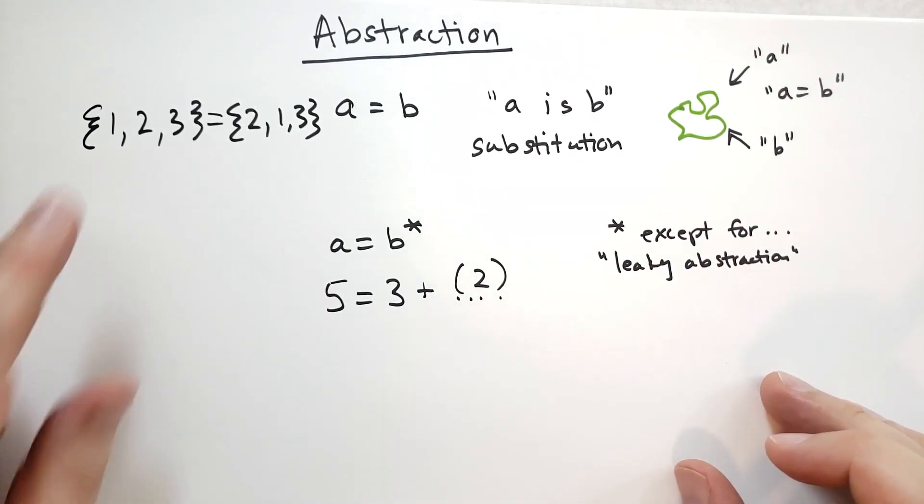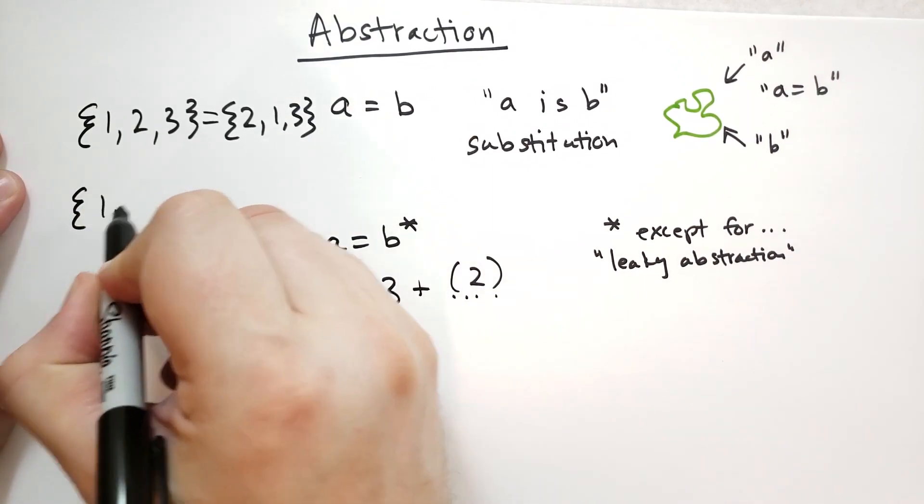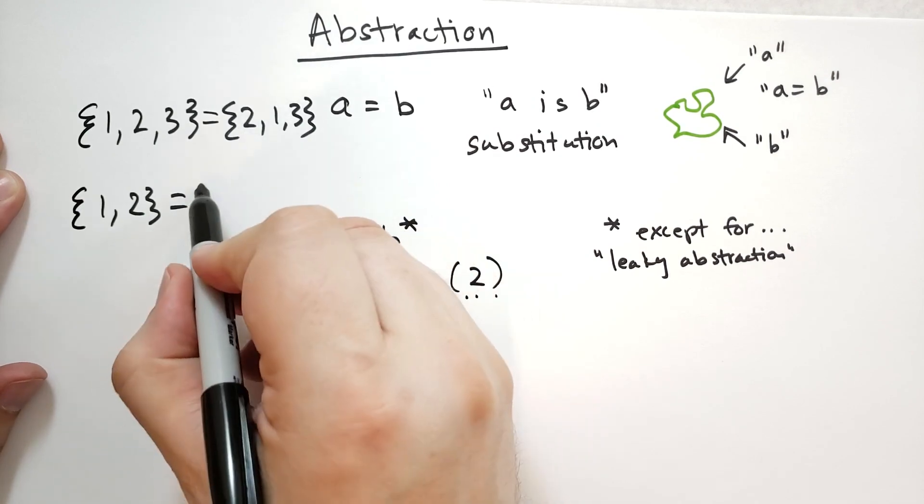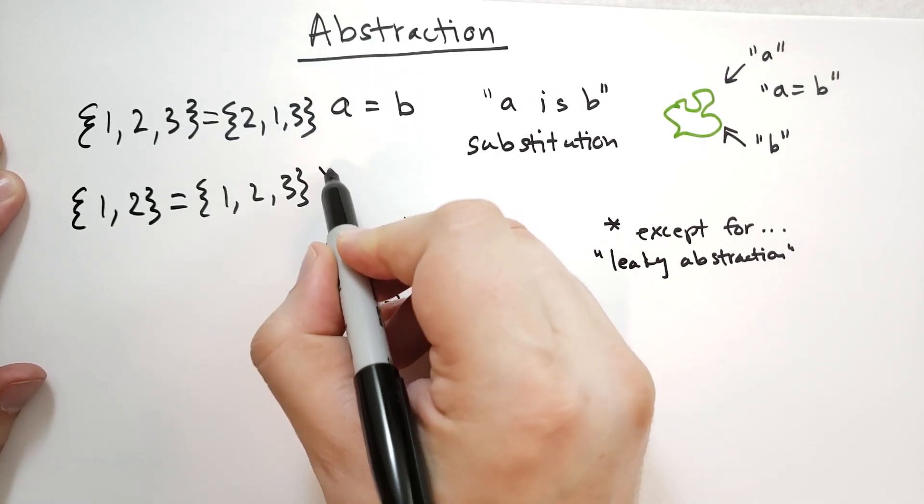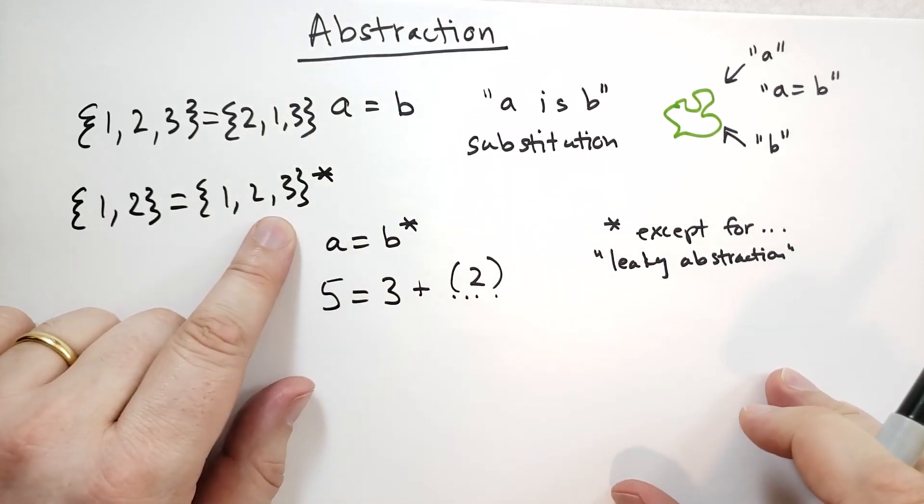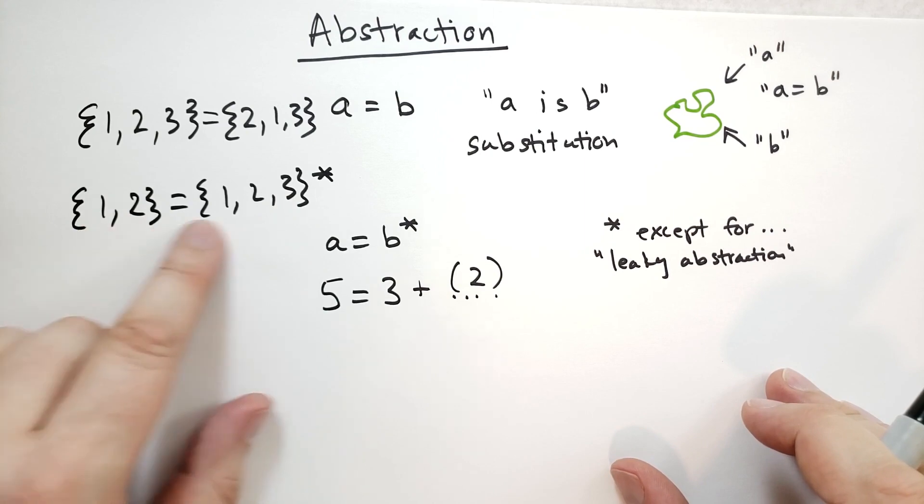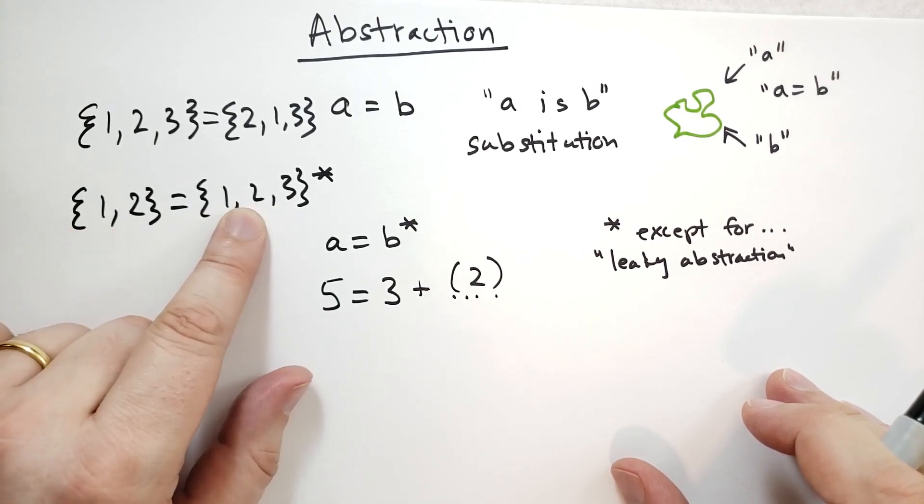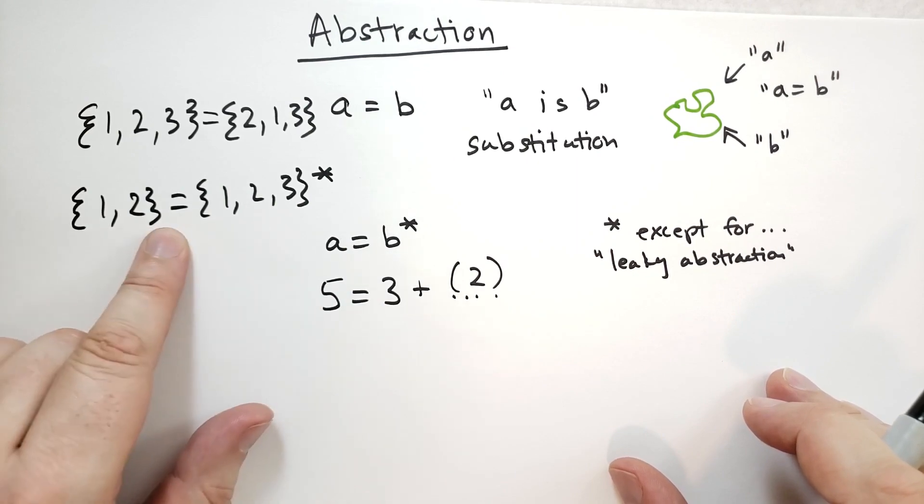Now, if I were to say that here we have a set {1, 2}, and that's the same as {1, 2, 3}, asterisk. There's obviously a difference. This one has the extra element 3. But for purposes here, this leaky abstraction is okay because 3 is not really that important. What's important is that they have 1 and 2.